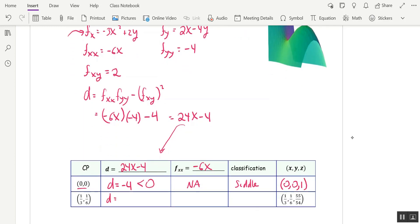Now let's test the second point. When I put a third in up here to the discriminant, 4x, I get 8 minus 4, which is 4. Now that's greater than 0, which means I do need to check fxx. When x is a third, fxx is negative 2. And that is less than 0. So I have a local min. And I went ahead and found the z coordinate for us because it took a little bit of arithmetic.